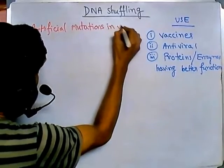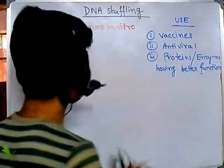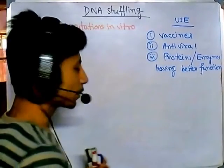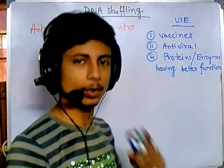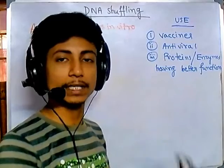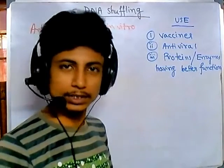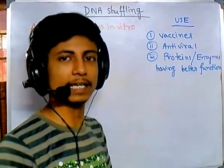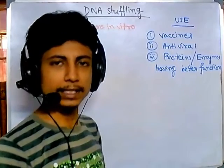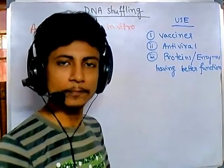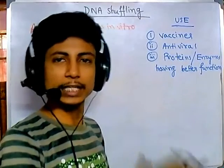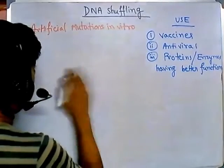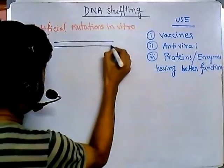Now, how can we achieve this artificial mutation in vitro? Let's take a simple example: the production of interleukin-1, IL-1 protein, which is required for chemical signaling in our immune system. IL-1 is very important to prevent viral infections, acting as an antiviral agent, so if we can produce more IL-1 it will be very helpful for treating viral diseases.